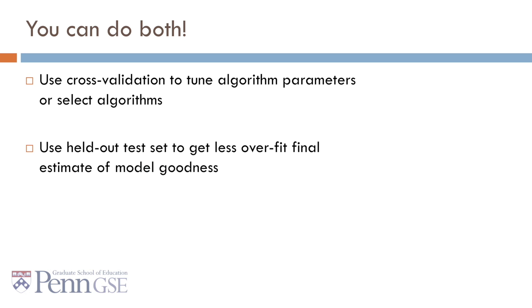Now the way I've been presenting it across the last set of slides makes it sound like either you use a held-out test set, or you do cross-validation. But in fact, you can do both. An increasingly popular practice is to take, say, 80% of your data set, and within that 80%, use cross-validation to tune algorithm parameters or select algorithms. Then in the remaining 20%, use a held-out test set to get less overfit final estimates of model goodness.